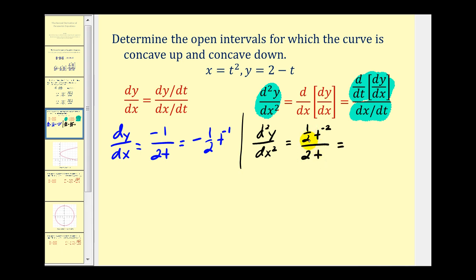One-half divided by two is the same as one-half times one-half, which gives us one-fourth. Subtracting the exponents, negative two minus one gives us t to the negative third, or t to the third in the denominator.